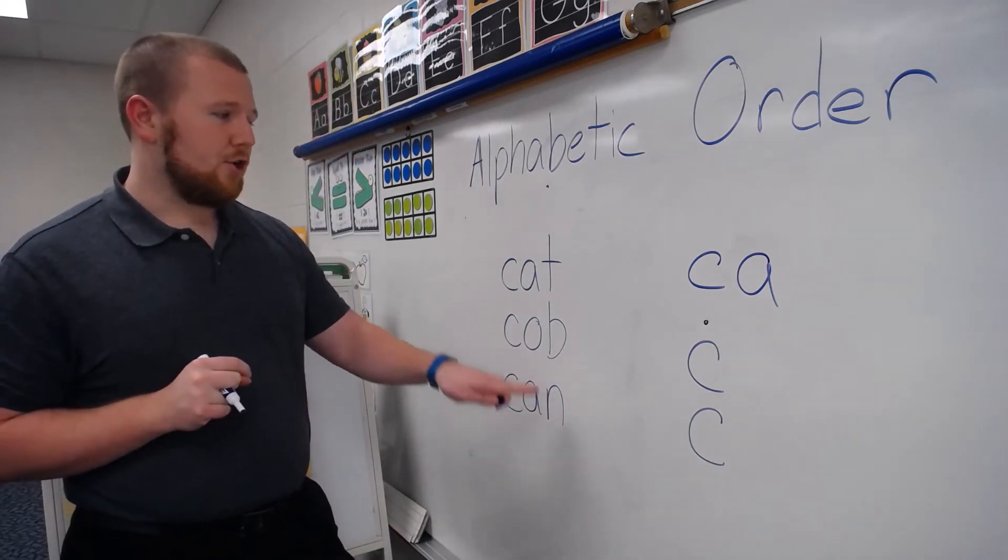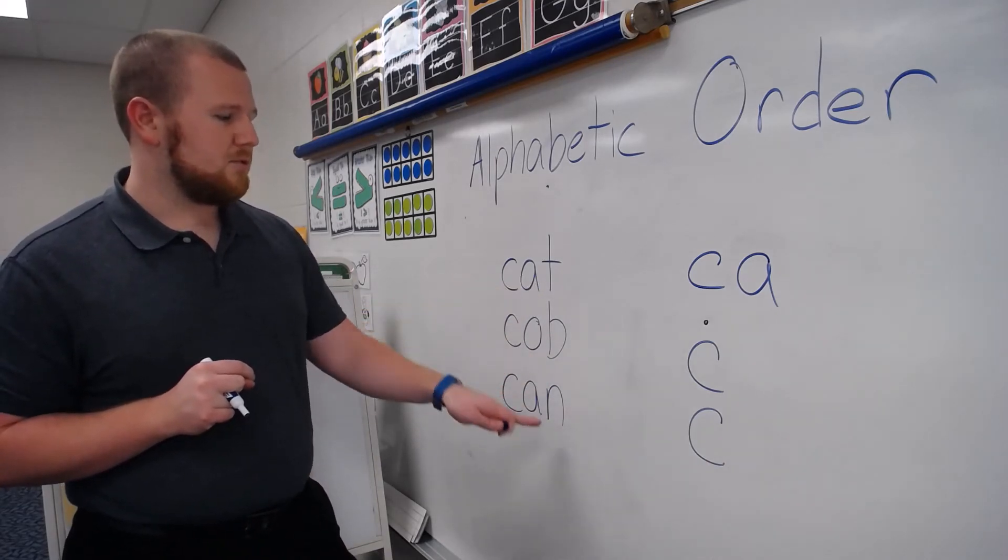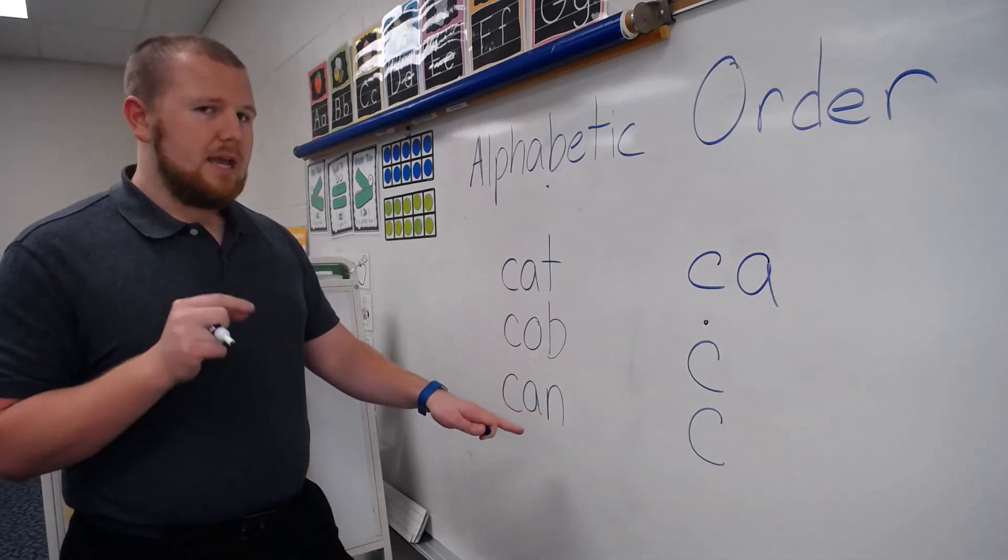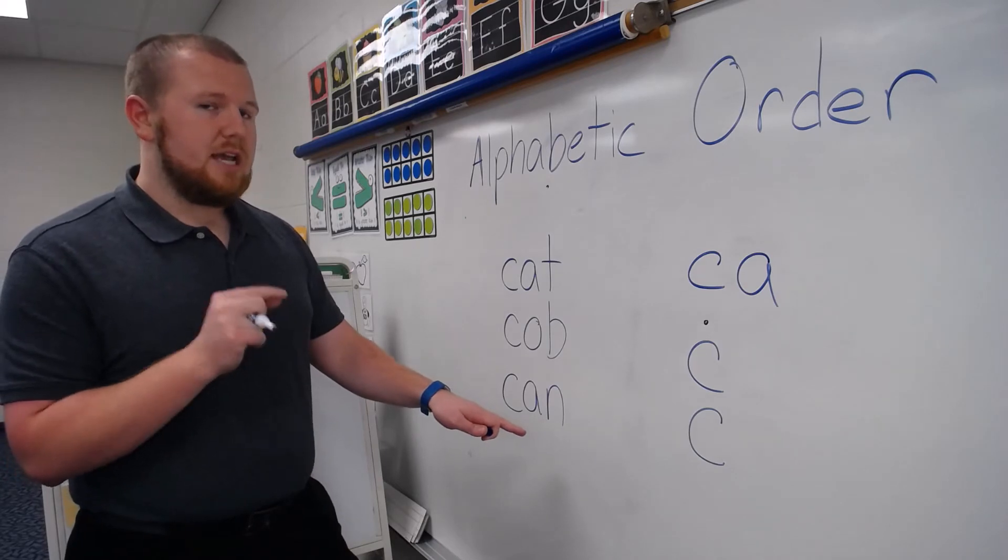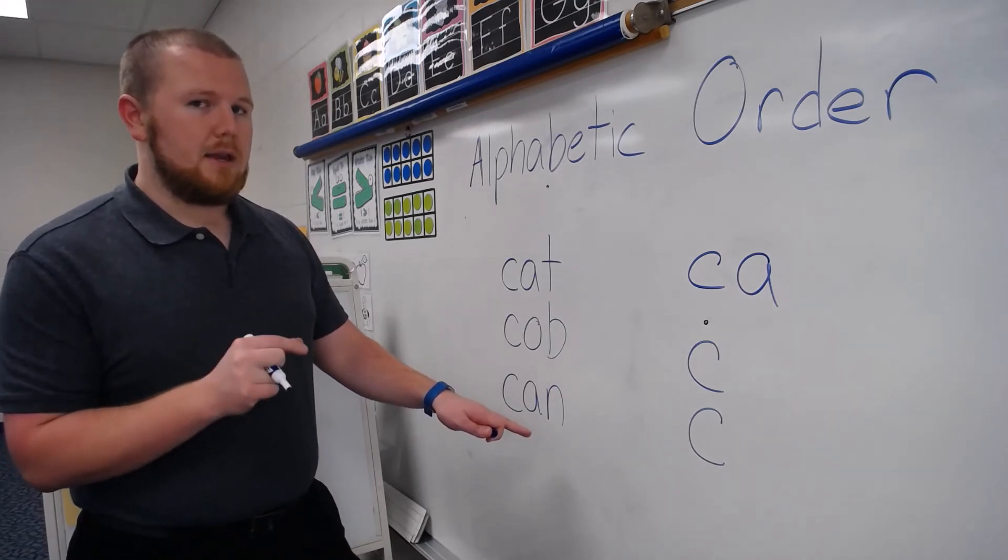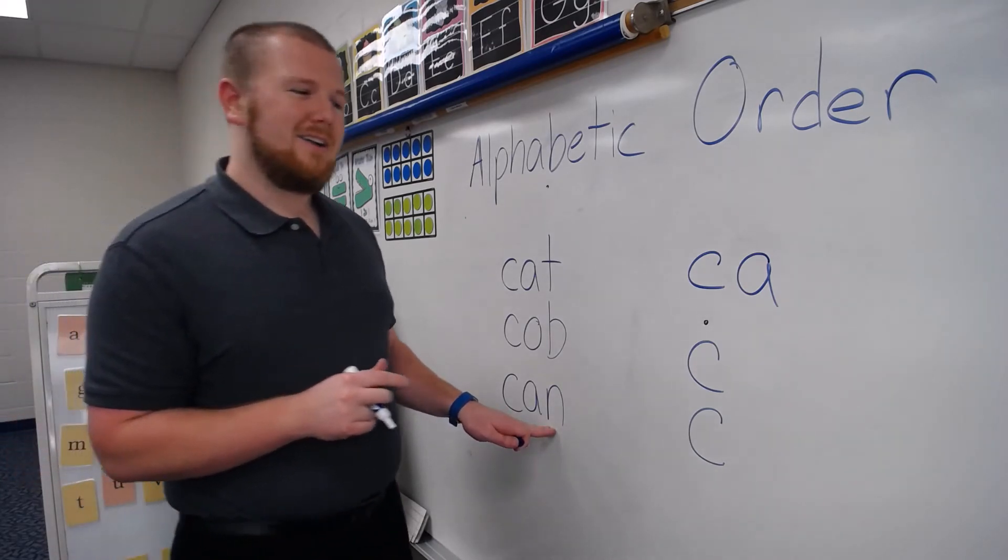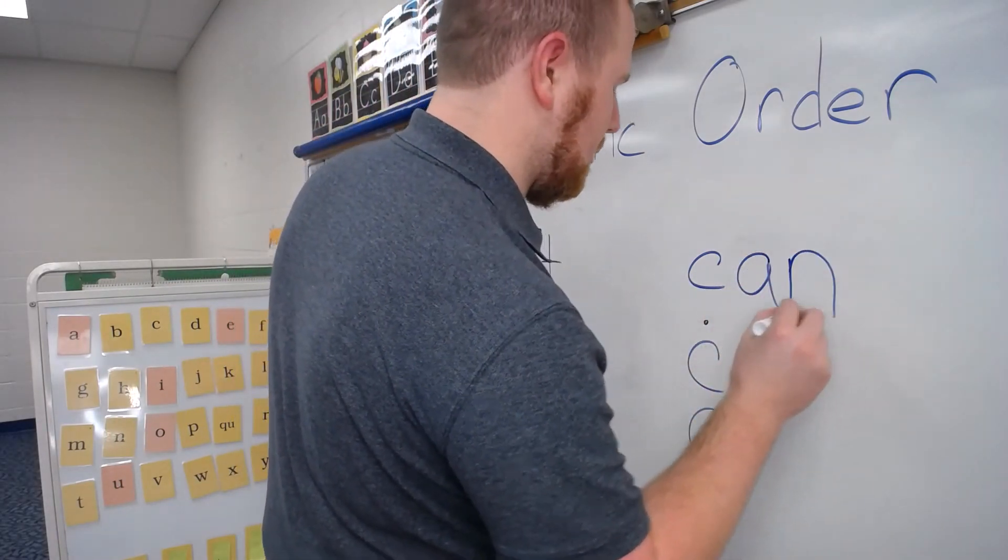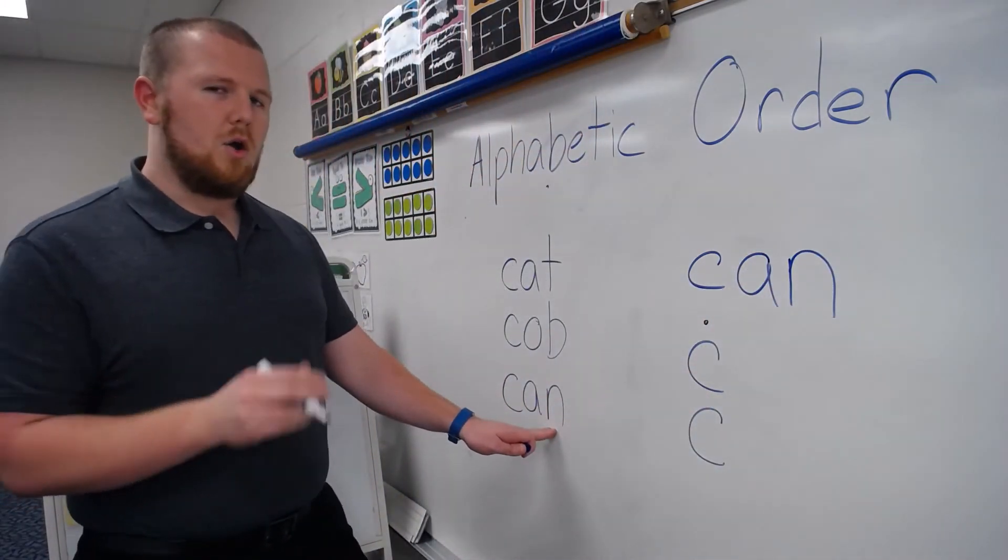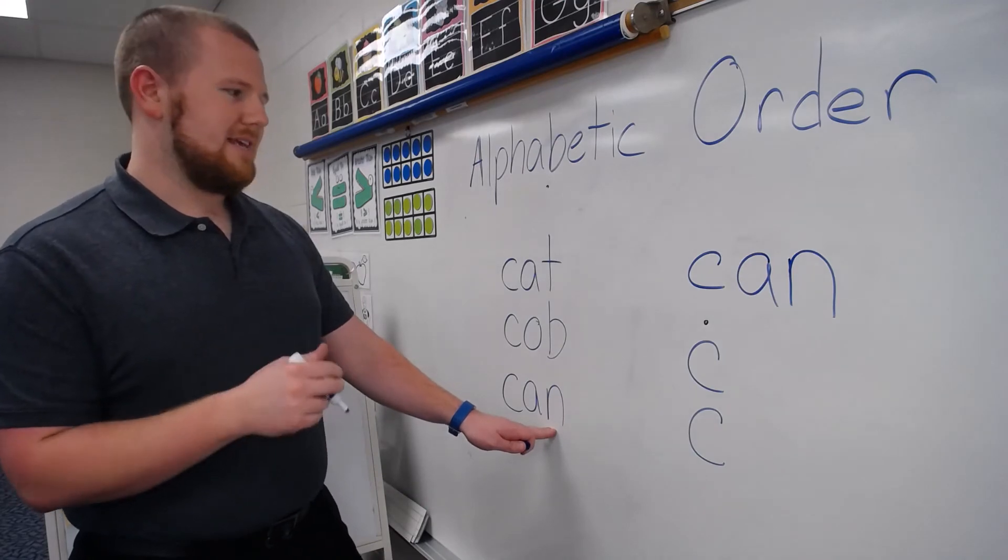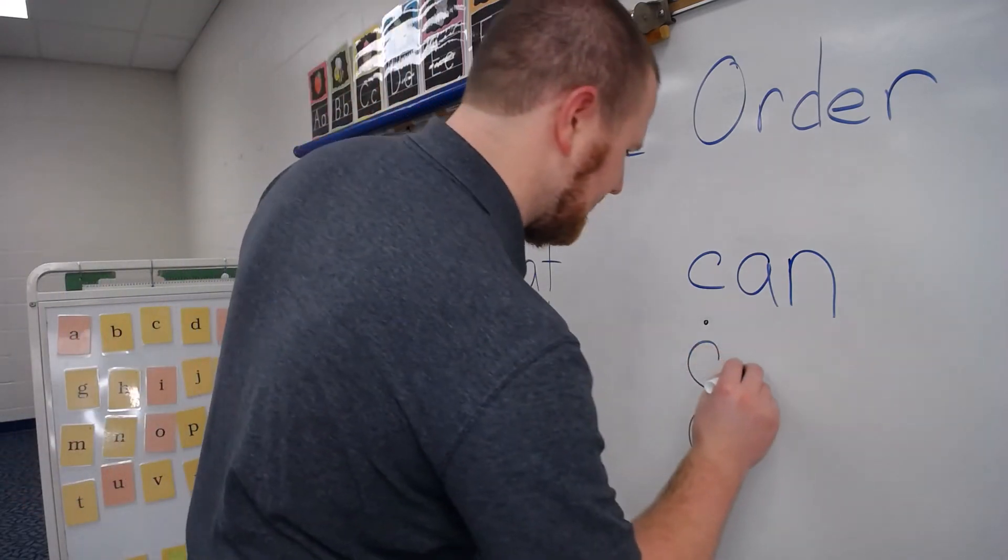Let's move on to the third letter. Which one comes first? We go through the alphabet. A, B, C, D, E, F, G, H, I, J, K, L, M, N. I heard an N. So I'm going to put that one there.